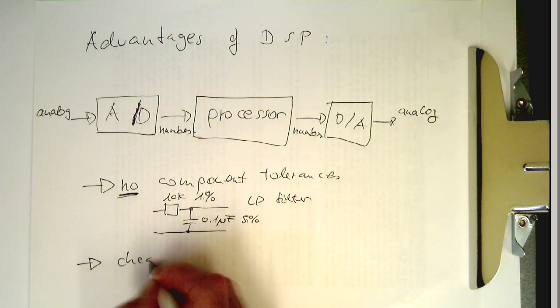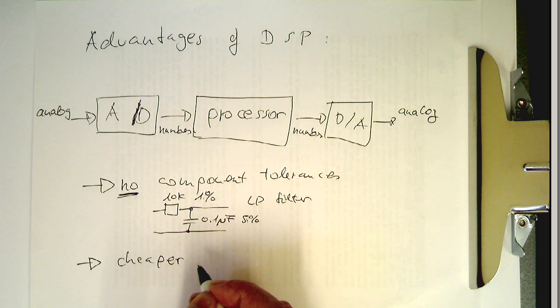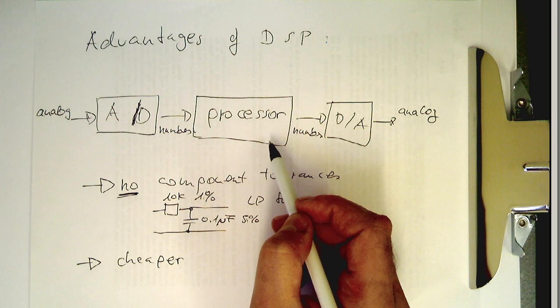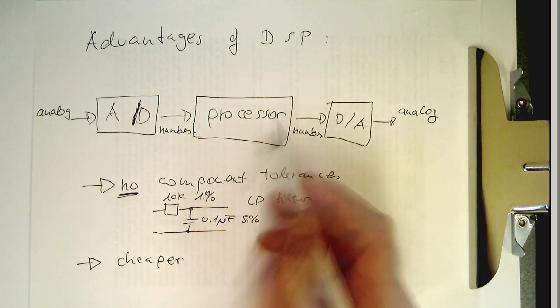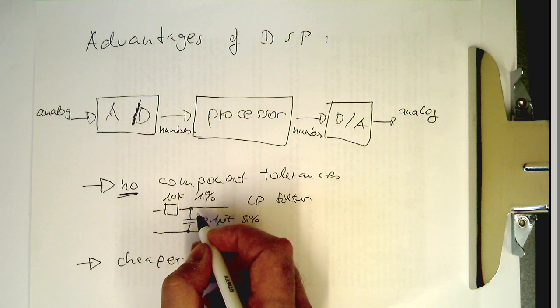DSP is much cheaper because we don't have any expensive components here. We've got just one processor doing all the work, so we don't need highly tuned or selected analog components.